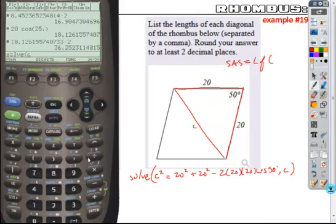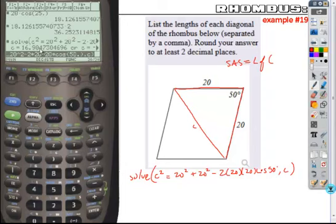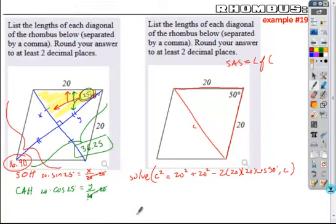C squared is equal to 20 squared plus 20 squared minus 2 times 20 times 20 times the cosine of 50. I'll put a decimal in here. So my answer is displayed as a decimal and I want to solve for C. So when I close that off and solve, I get my answer which I see here is 16.90, which is about what I got here as well.